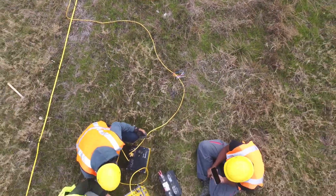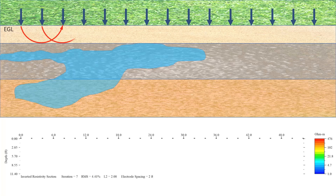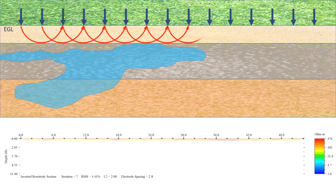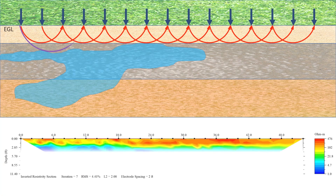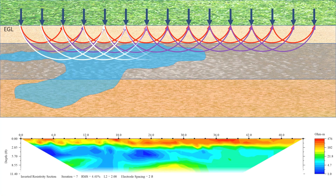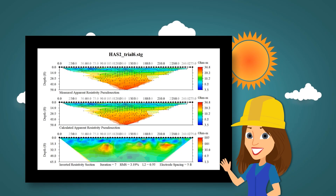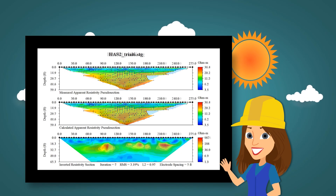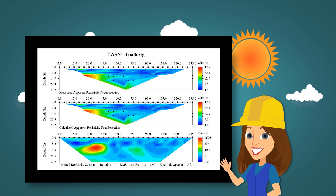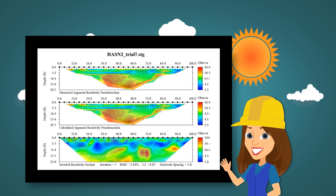We can use a DC battery to pass electricity through the electrodes. This way, we can log the resistivity of the soil, and with the help of Earth Imager 2D, we obtain the resistivity image. Following this simple procedure, we can get resistivity images for different soil profiles.